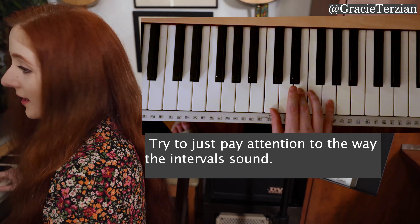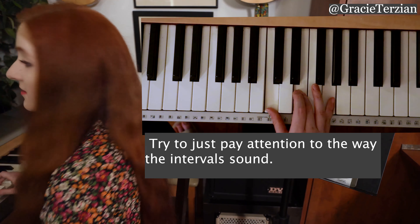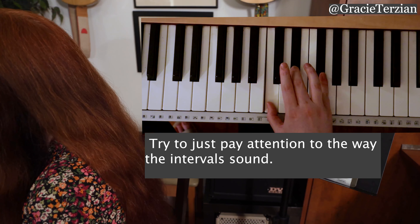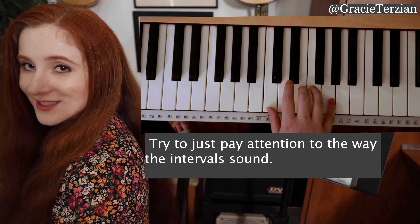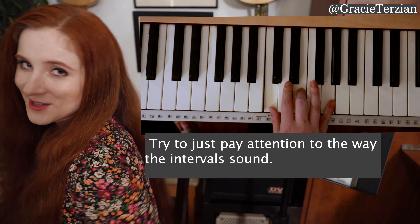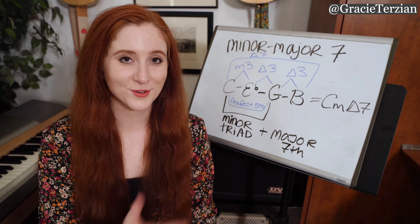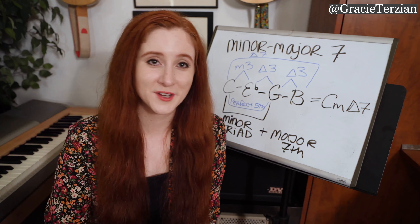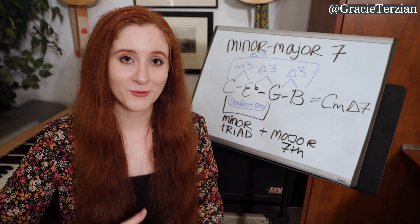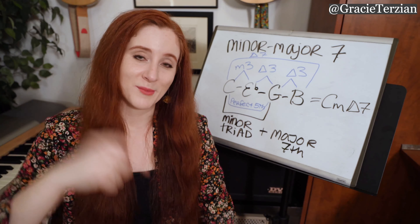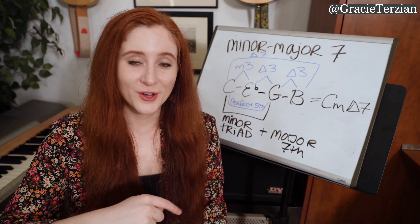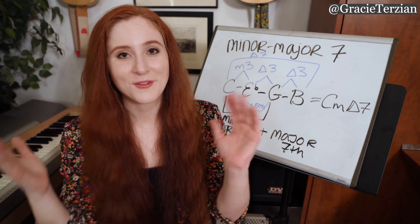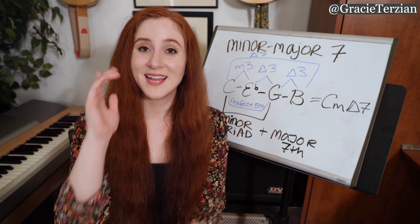Now let's listen to the triads. This is a C major triad. This is a C minor triad. This is a C diminished triad. And we'll end back on our C major triad. Again, thank you guys so much for watching. Don't forget to subscribe if you're new to my channel — I post one video a week. If you want to practice what we learned or want it all written out nicely, check out my worksheets in the description below. Don't forget to give it a big thumbs up, leave a comment, and share this video. Thank you guys so much, and see you next week.